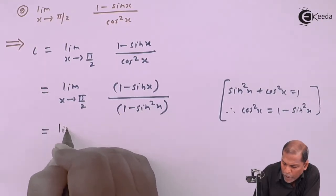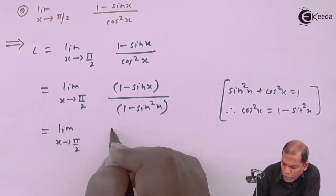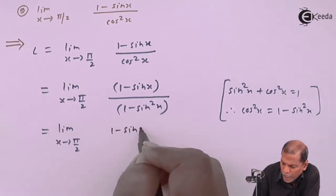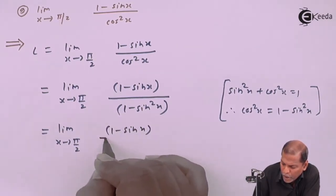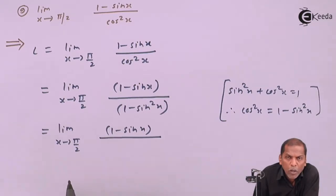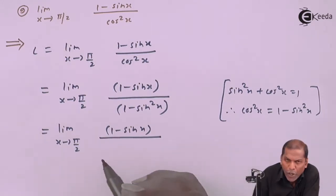So that equals the limit as x tends to π/2 of (1 - sin x) over... now (1 - sin²x) is of the type a² - b². So by using this formula...